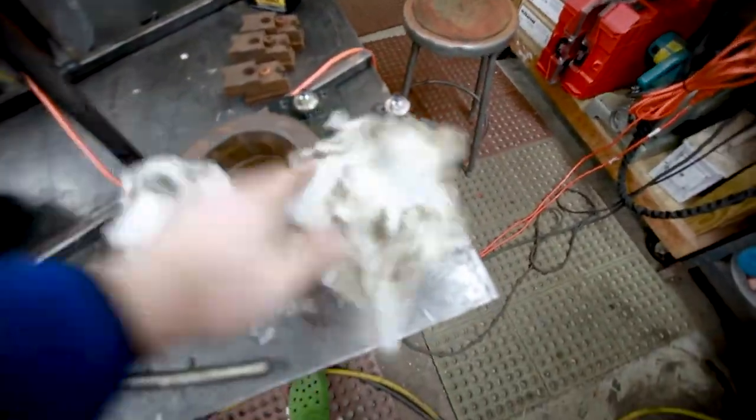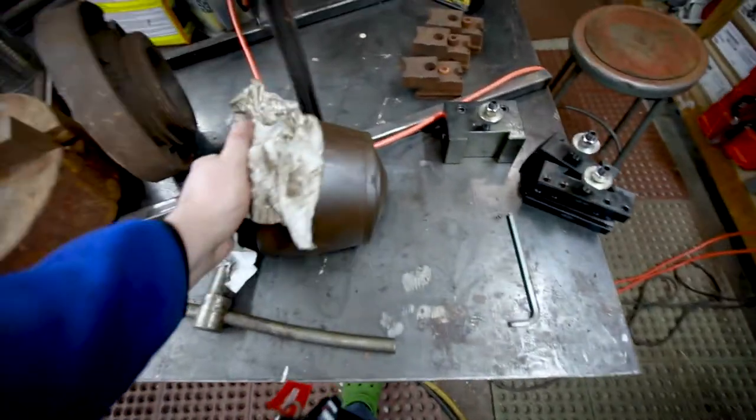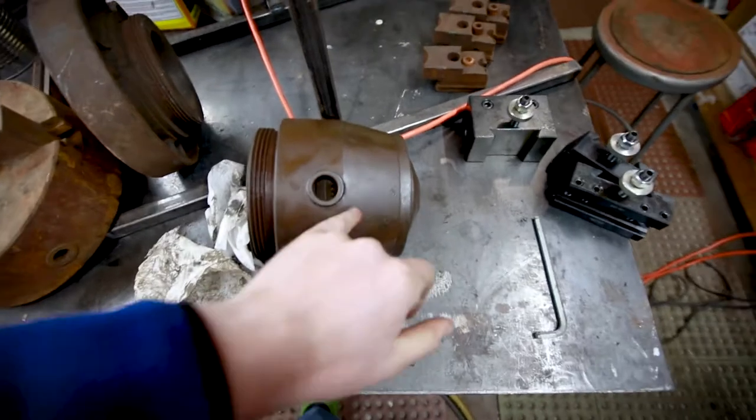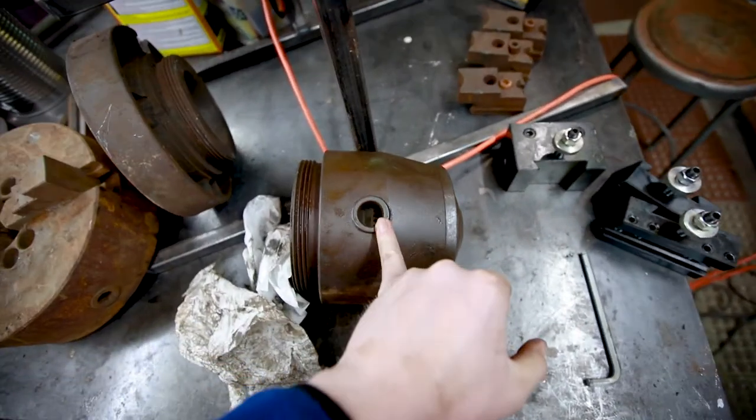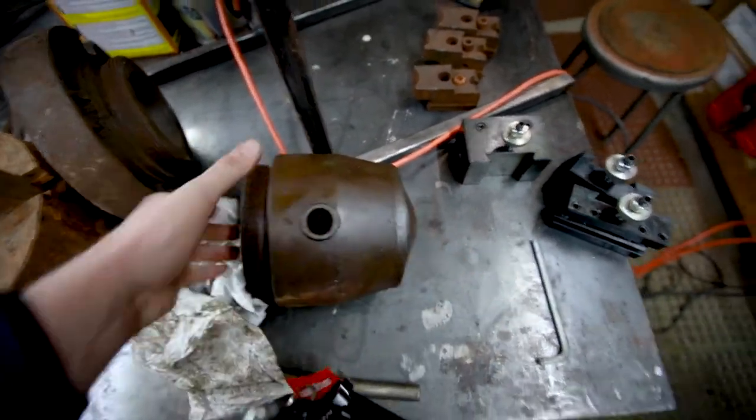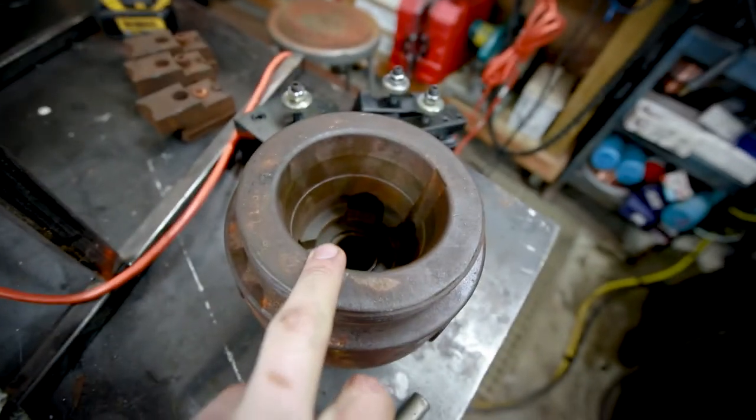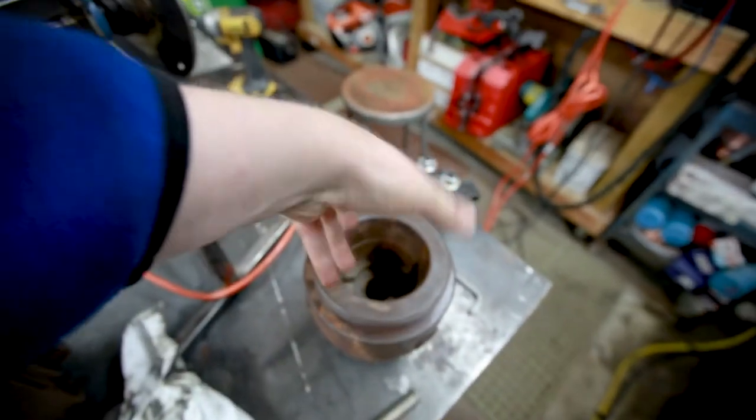This video is about making a key for this collet chuck here. Basically it looks like you need like a drill chuck key that fits down in this hole and actuates this gear down in there. I don't know if you're going to be able to see that or not, but there's a rotating flat gear in there. So you need something you can jam in there and turn it.